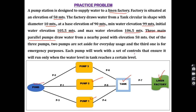Each pump works with a set of controls that ensure it runs only when the water level in the tank reaches a certain level. For example, if the water level in the tank is below some point, one of the pumps will start automatically. This will be explained in detail in the next slide.